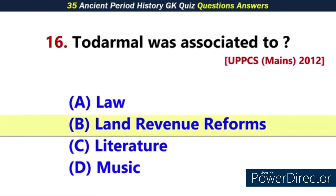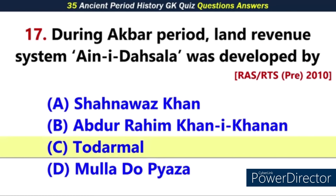Q16. Todar Mal was associated with — Answer: B. Land Revenue. Q17. During Akbar's period, the land revenue system Dasala was developed by...